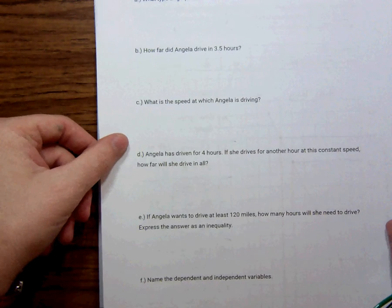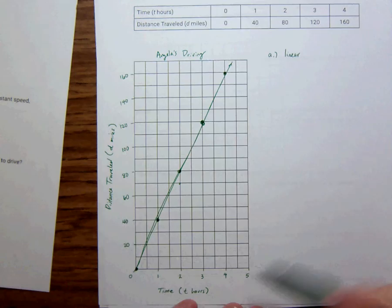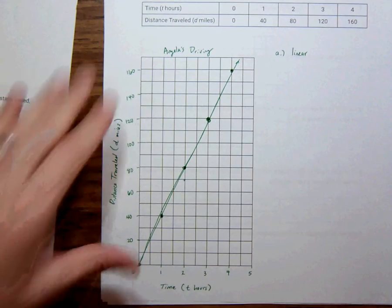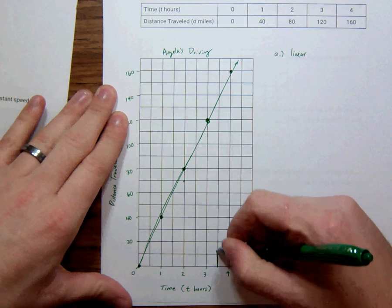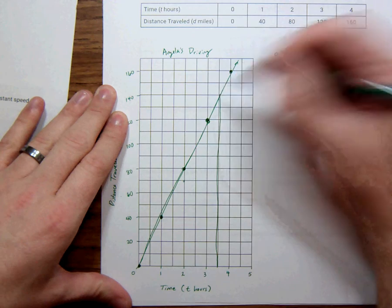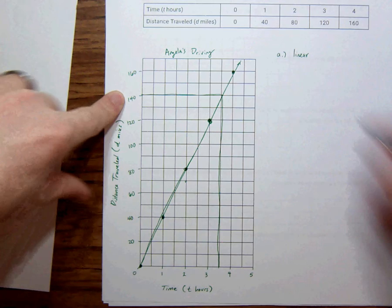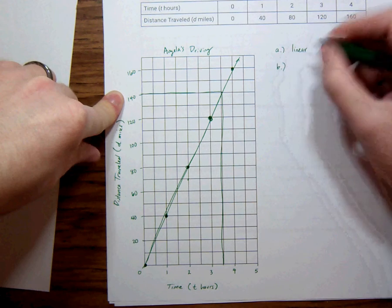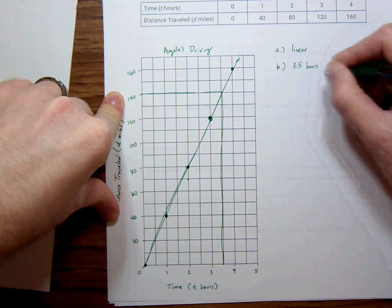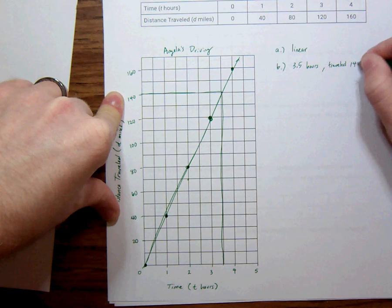B, how far did Angela drive in 3.5 hours? So the way I do this is I look at 3.5 on my graph. And this is why it's so important to do your graph correctly. 3.5 hours. Go all the way up until it meets the graph. And then go over to see the distance traveled. It's 140. So part B, in 3.5 hours, Angela travels 140 miles.